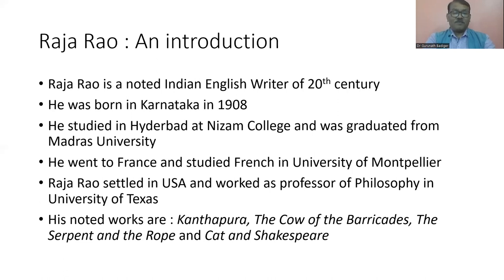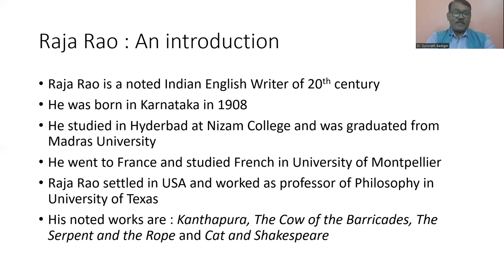Raja Rao worked as a professor of philosophy at the University of Texas. He contributed greatly to the development of the Indian English novel. His best works are Kanthapura, a historical novel; The Cow of the Barricades, a collection of short stories; The Serpent and the Rogue, another novel; and Cat and Shakespeare, also a novel by Raja Rao. Although his literary output is comparatively lesser than that of Mulk Raj Anand and R.K. Narayan, he made a very significant contribution to the development of the Indian English novel.